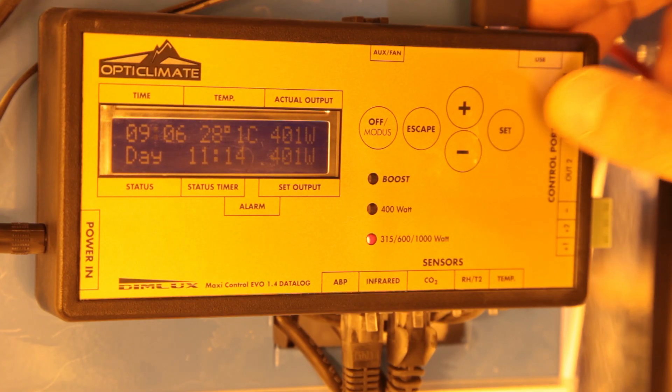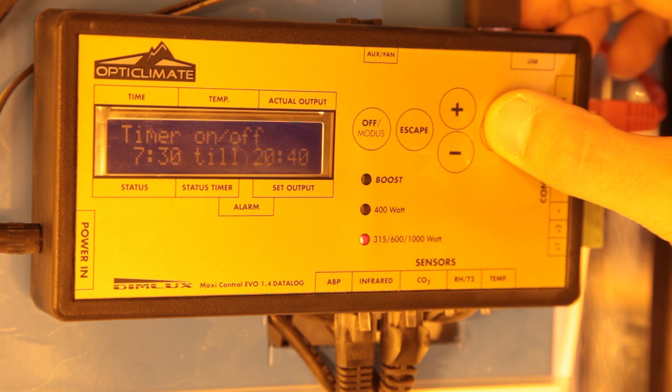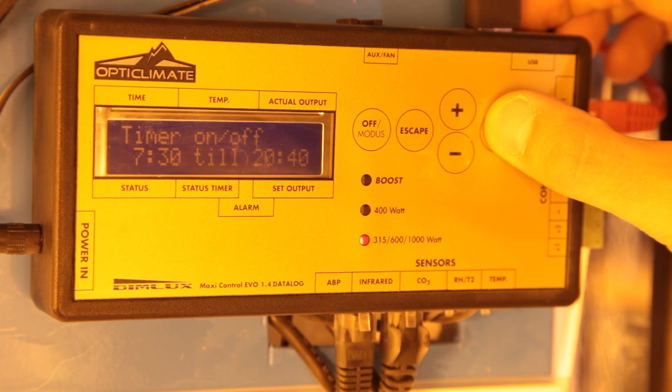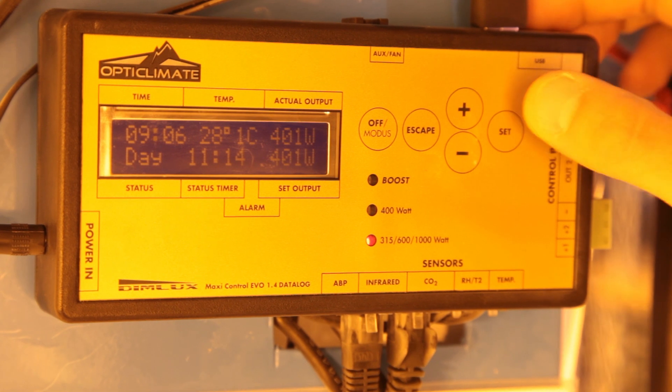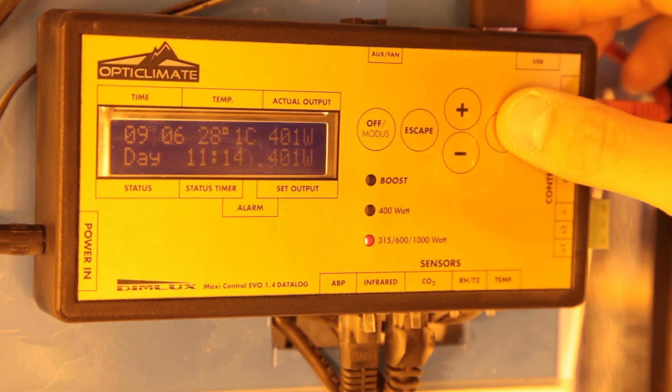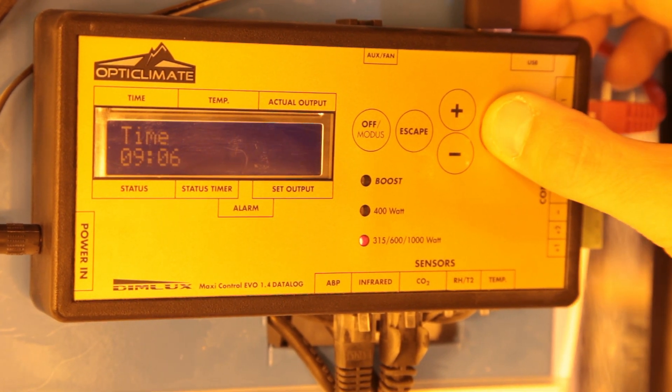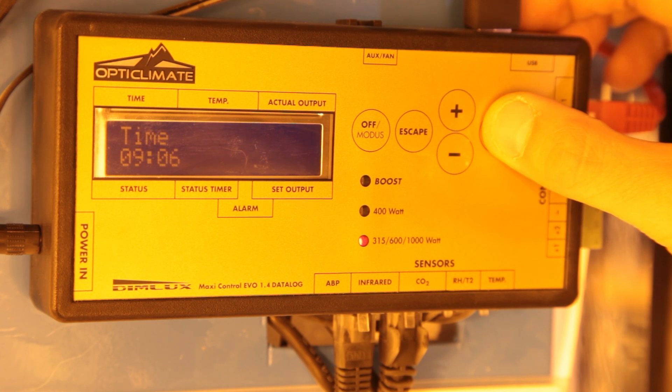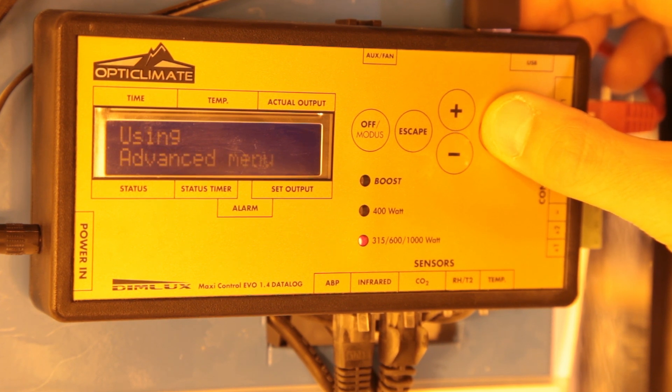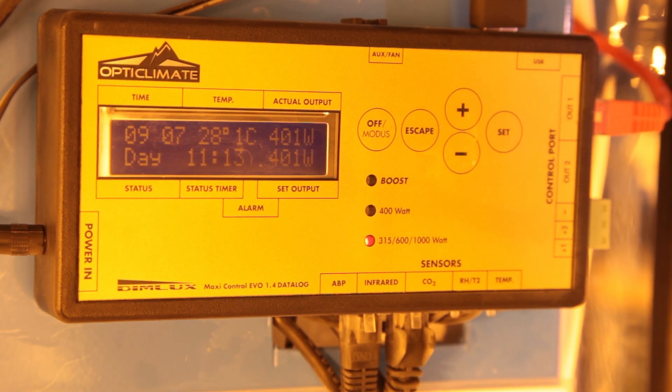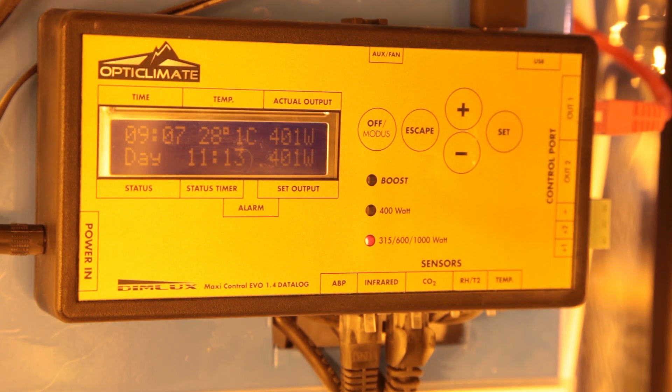Today we're going to talk you through the basic operation, the features that most of our customers tend to use when running one of these systems. The Maxi Controller is capable of a lot so programming it can seem a little bit intimidating but actually it's pretty easy. First things first, hold down the set button to switch between basic and advanced modes. Switching to advanced will allow you to take advantage of the full range of features.